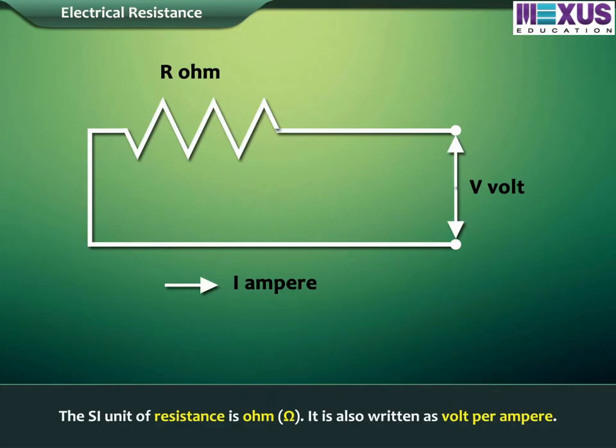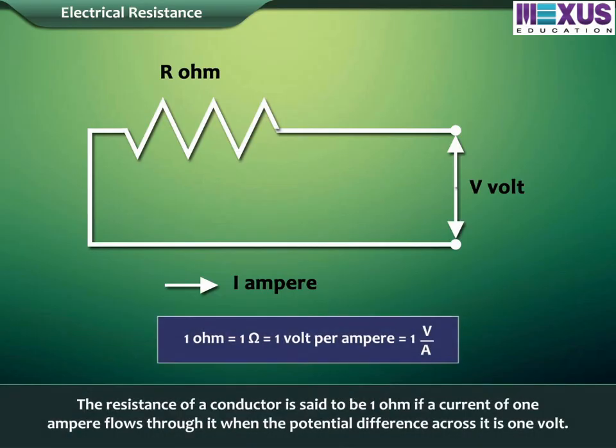The SI unit of resistance is Ohm. It is also written as volt per ampere. The resistance of a conductor is said to be 1 ohm if a current of 1 ampere flows through it when the potential difference across it is 1 volt.